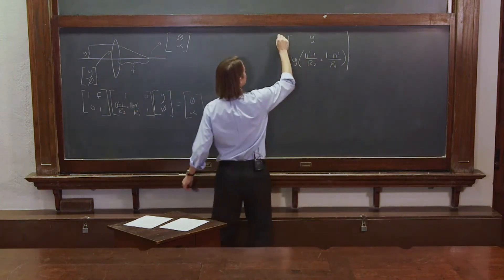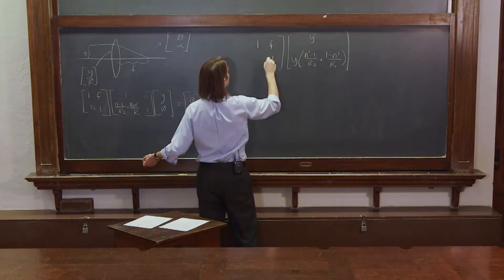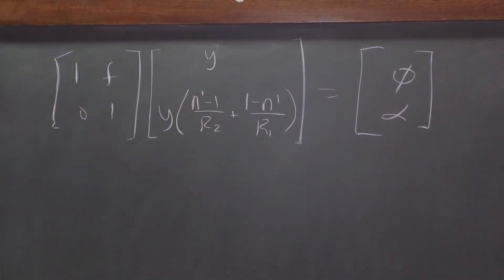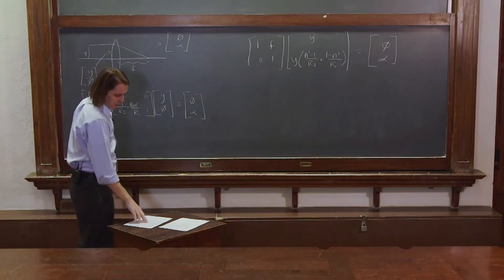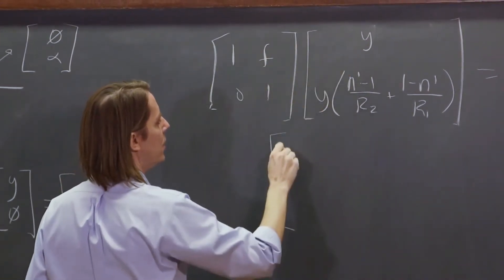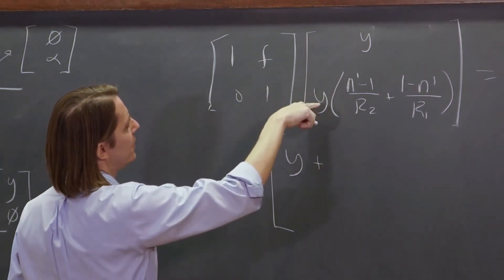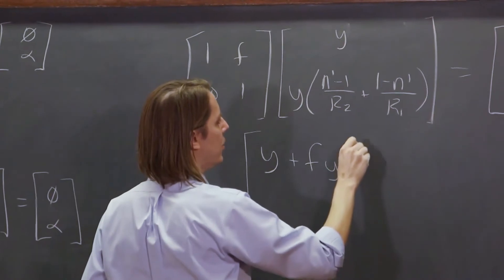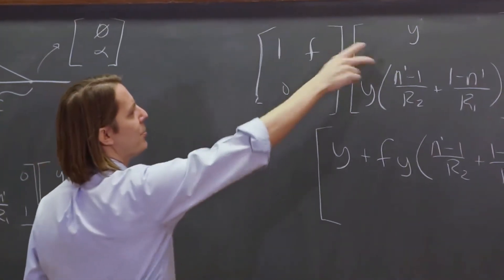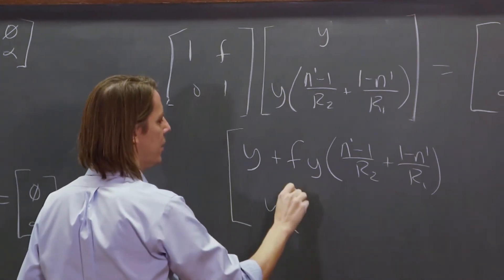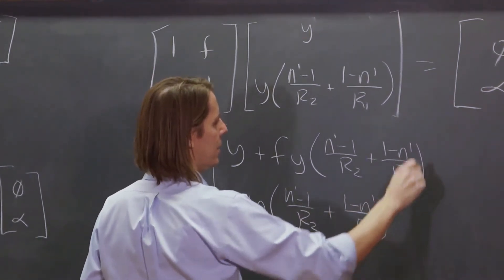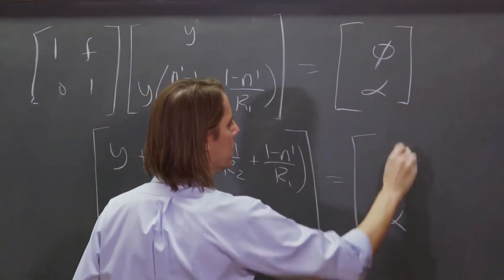That's the new vector, and that's multiplied by the matrix 1, f, 0, 1, and that better be equal to 0, alpha. We just did those two, and now we'll keep going. The top of the vector is 1 times y plus f times y times n prime minus 1 over r2 plus 1 minus n prime over r1. And then the bottom part is 0 times y plus y times n prime minus 1 over r2 plus 1 minus n prime over r1. And that's equal to 0, alpha.